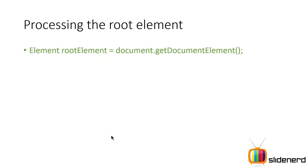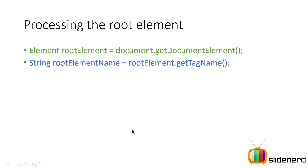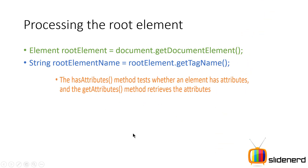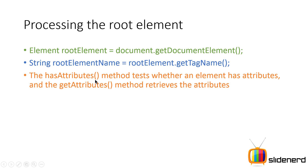If you remember from the previous video, we talked about the DocumentBuilderFactory — using that we created a DocumentBuilder, and using that we had a Document. So when you say document.getDocumentElement(), this gives you the root element inside your XML document. That root element's name can be retrieved by calling rootElement.getTagName(). For example, if it's 'catalog' which is the root element of your XML document, then the string rootName is going to contain the value 'catalog'.